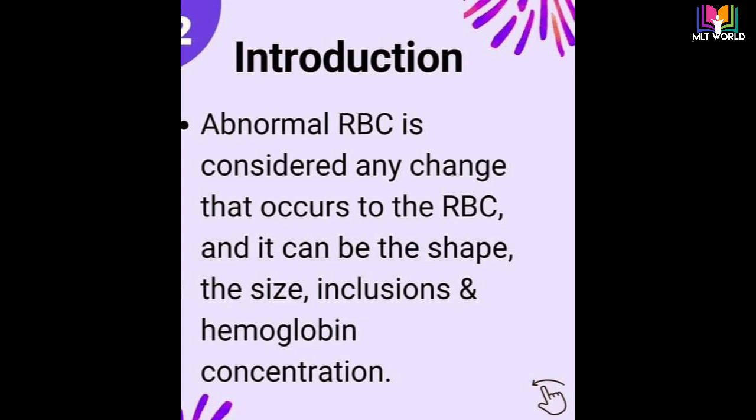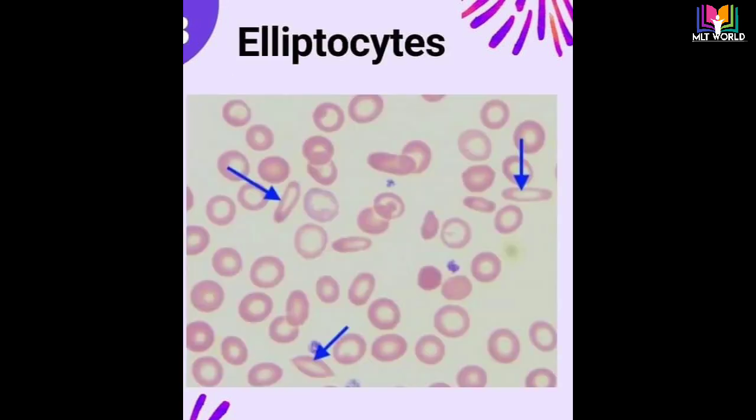Abnormal RBC is considered any change that occurs to the RBC, and it can be in shape, size, inclusion, and hemoglobin concentration. If the size is less than normal, we will call them microcytic cells, and if it is more than normal size, that will be called macrocytic. So in RBC morphology, if the size is less we call it microcytic anemia, and if the size increases it will cause macrocytic anemia, depending on the different type of conditions.